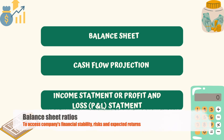The balance sheet ratio basically indicates the relationship between two items in the balance sheet. These ratios are useful in analyzing the company's financial stability, risks associated, and the expected returns.